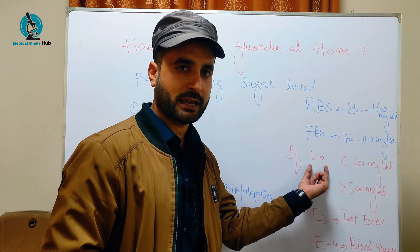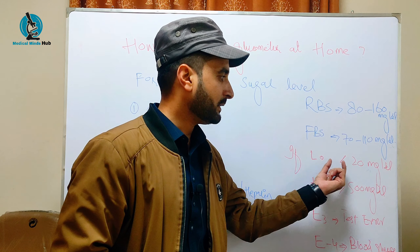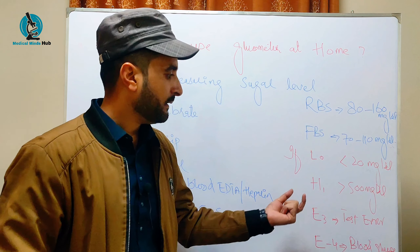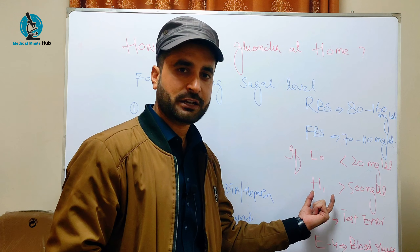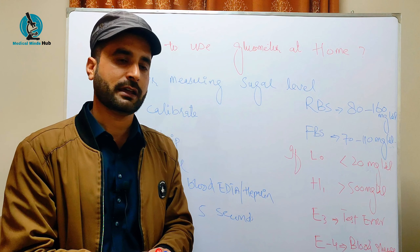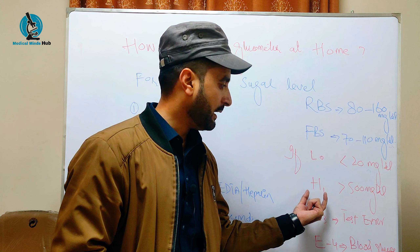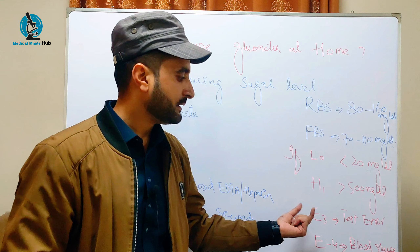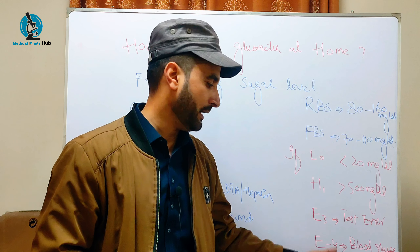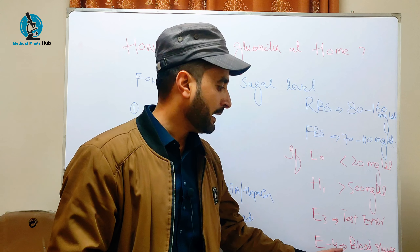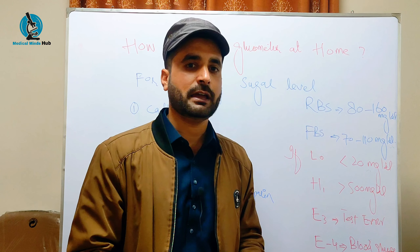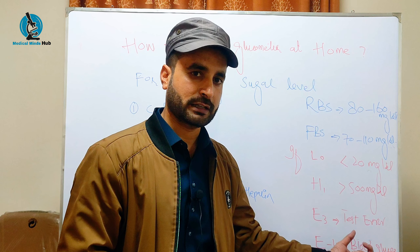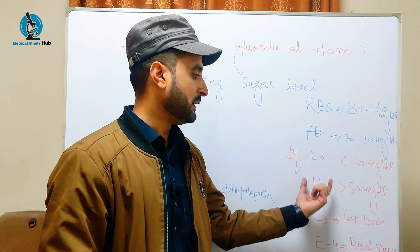When using the Glucometer, the display LO is very important — it means the patient's sugar level is below 20 mg per dL, which is an emergency. HI means blood sugar is above 500 mg per dL. A test error on the screen also indicates a problem with the reading.